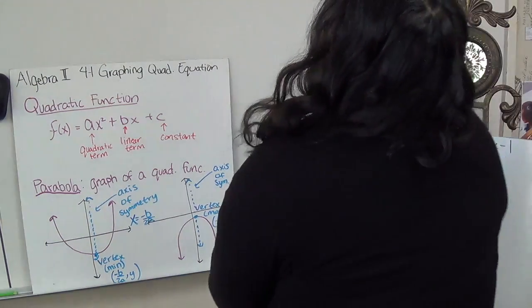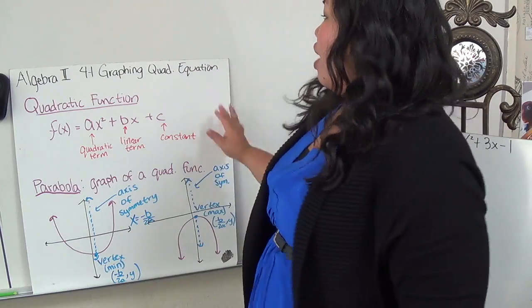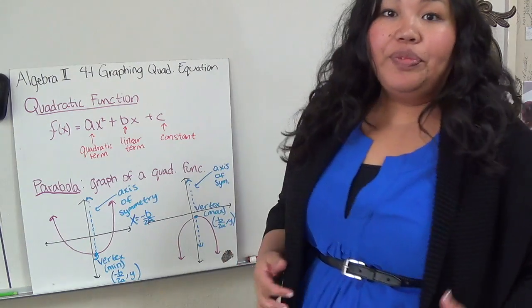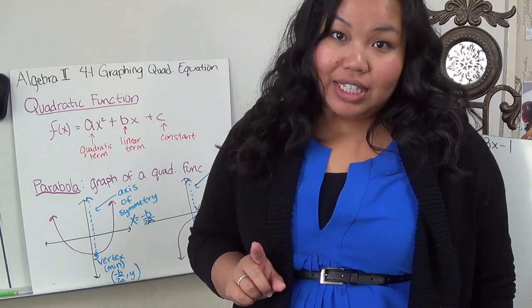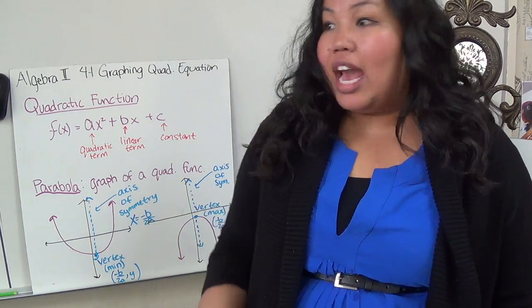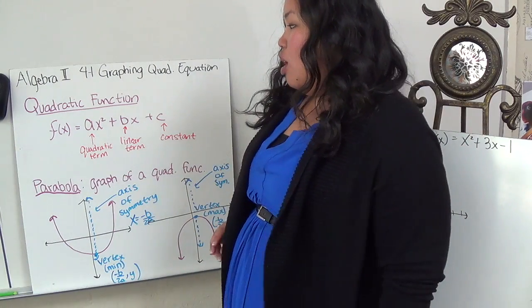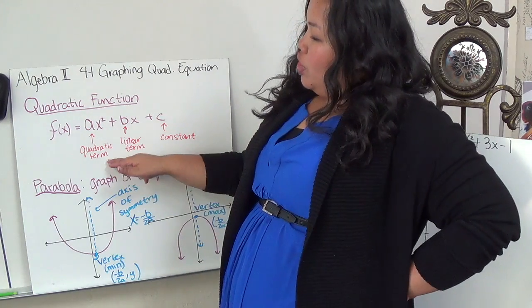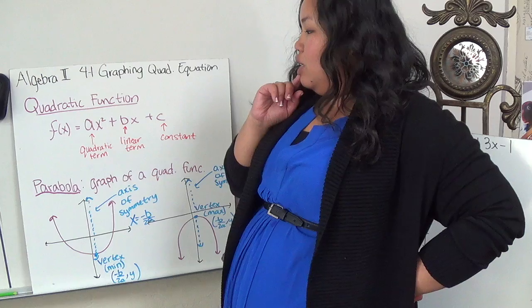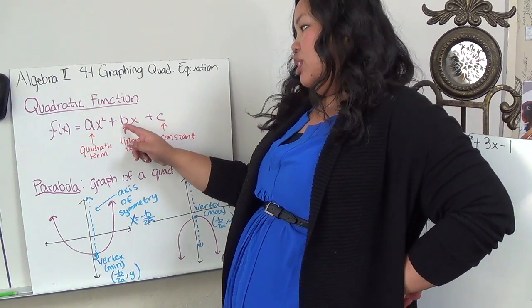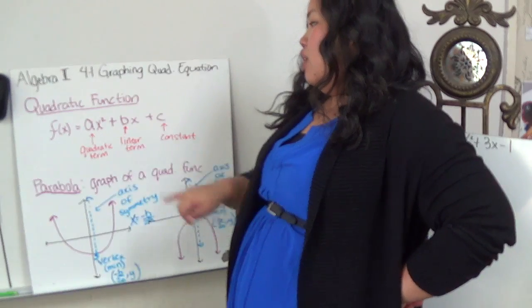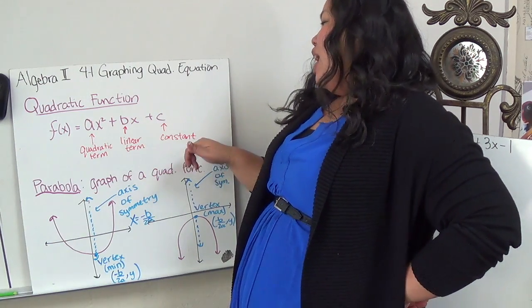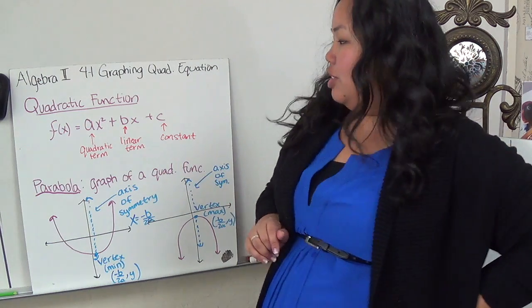In Algebra 2, Section 4.1, we're dealing with graphing quadratic equations. A quadratic equation is basically an equation that has an x squared in it. So there's a quadratic term, which is the term in front of the x squared. There's a linear term, which is the coefficient in front of the x, and a constant that has no x next to it.